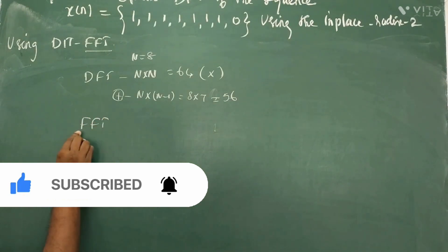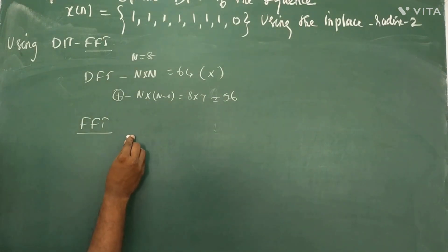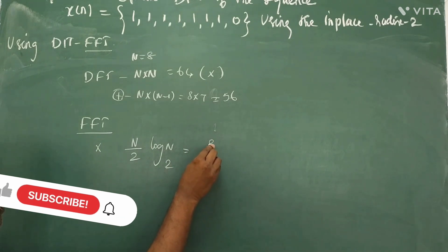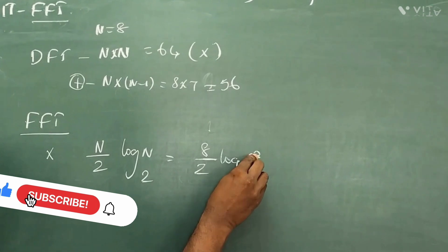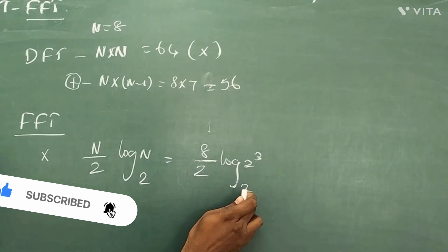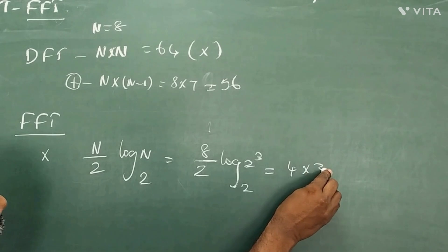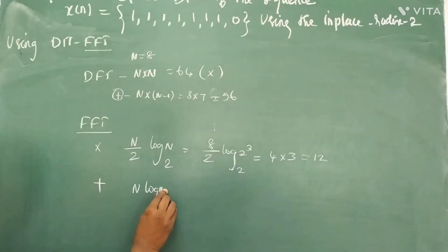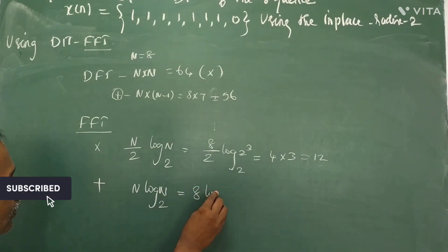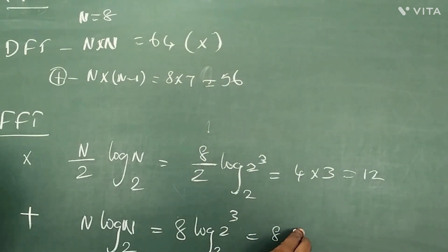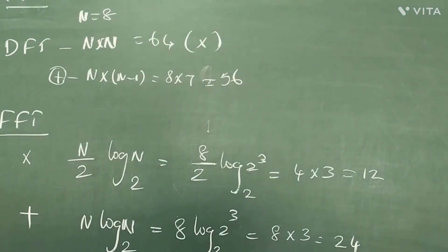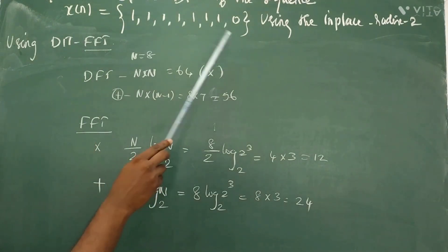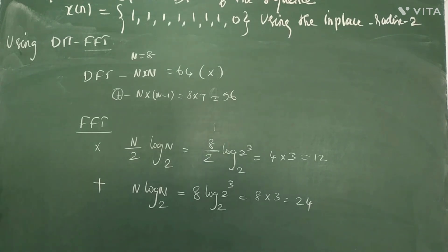By using the FFT algorithm, the number of multiplications and additions is reduced. For multiplications, it is (N/2)×log₂N. With N=8, writing 8 as 2³, that gives (8/2)×log₂(2³) = 4×3 = 12 multiplications. The number of additions required is 24. So that is why we go for the FFT algorithm — it significantly reduces computational complexity.